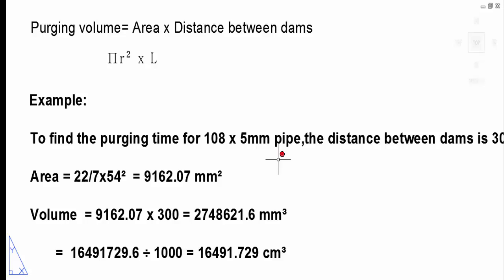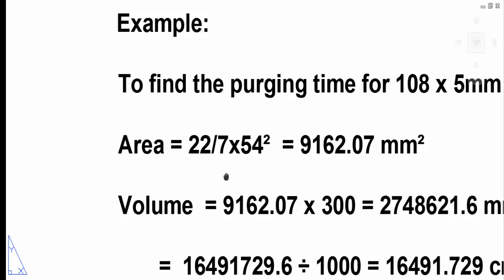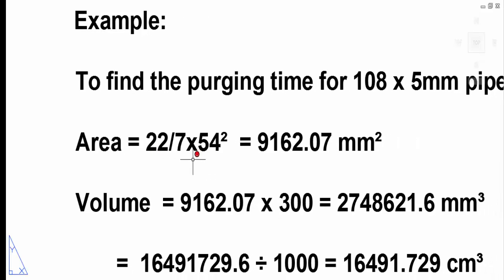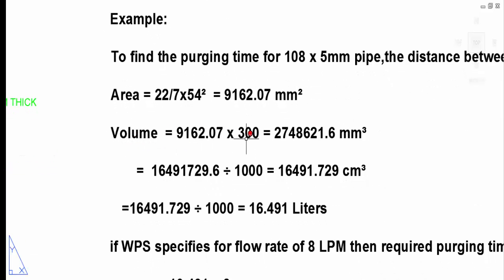For example, for a 4 inch pipe with distance between the dam of 300mm, calculate the area: 22/7 times 54 squared equals 9162.07 mm squared. Volume equals 9162.07 times 300 equals 2748621.6 mm cubed.